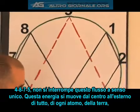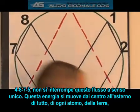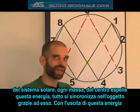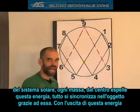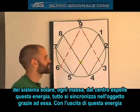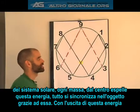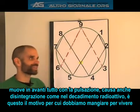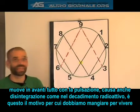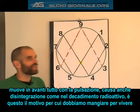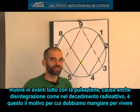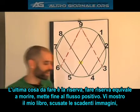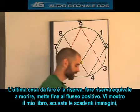Even though this energy moves omnidirectionally — in other words, it comes from the center of everything outward, from the center of every atom, from the center of the earth, from the center of the solar system — any body of mass in equilibrium has this energy coming out of its center and synchronizing everything connected to its body. As this energy comes out in all directions, it's pulsing everything forward. It's also causing disintegration. What you could observe in some cases is radioactive decay, which is based on doubling or half-life. This is why we always have to eat to stay alive, because it's a systemic living system. The last thing you want it to do is to back up — backing up is the equivalent of death. It puts an end to the positive flow.